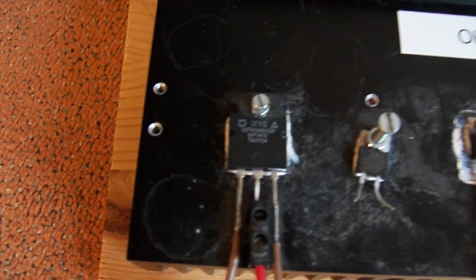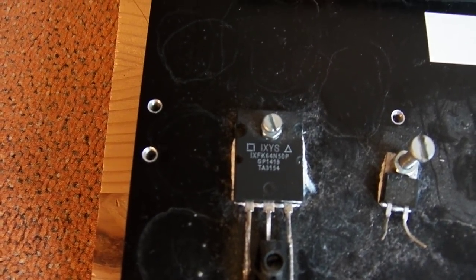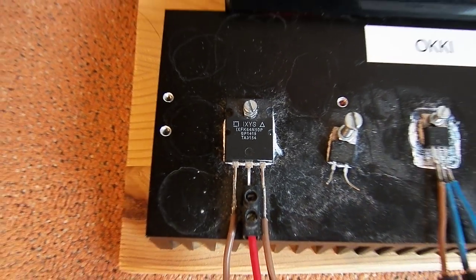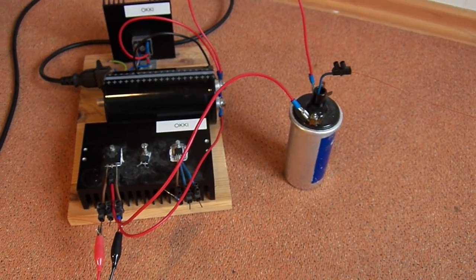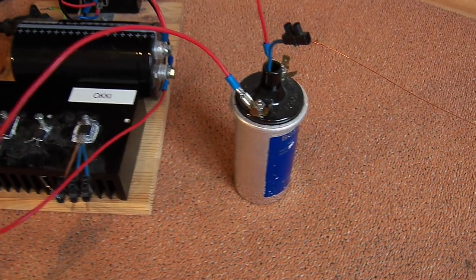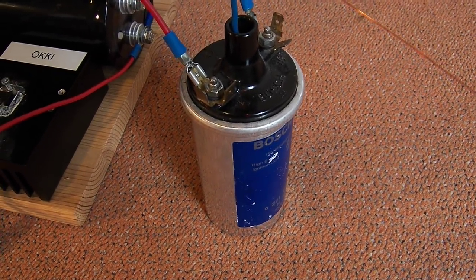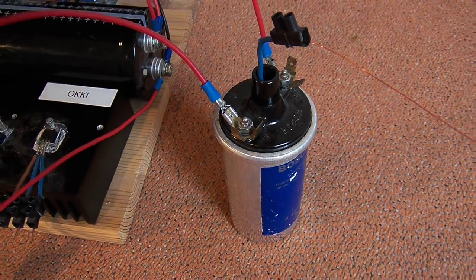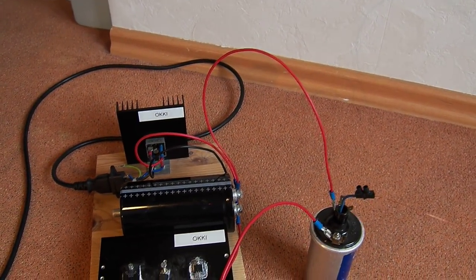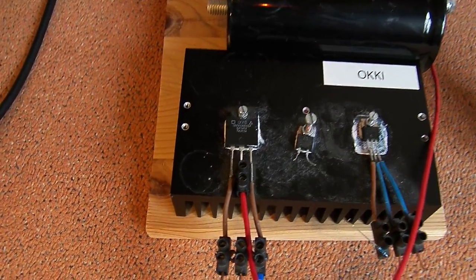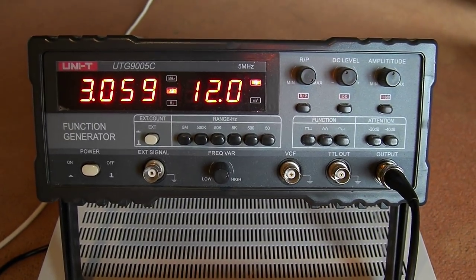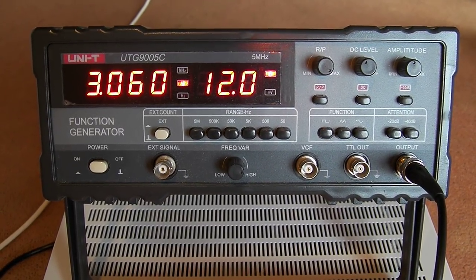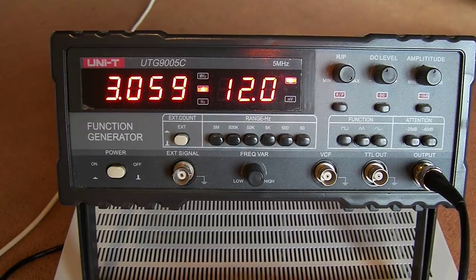And this is my MOSFET. This MOSFET is used to switch the ignition coil and will be triggered by this frequency generator. This frequency generator is running at 3 kilohertz.